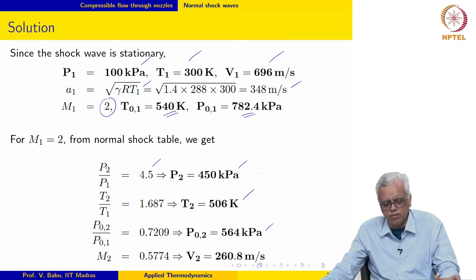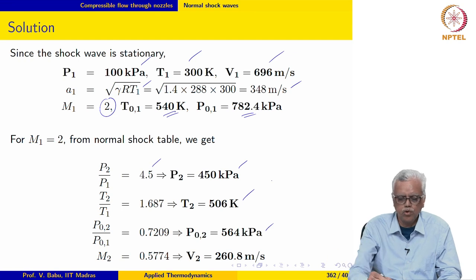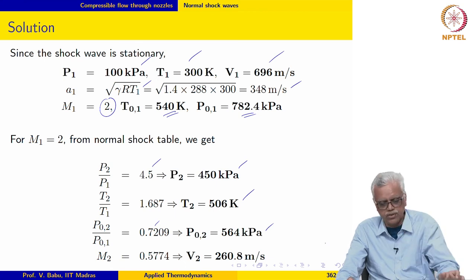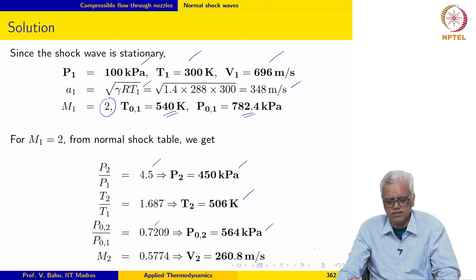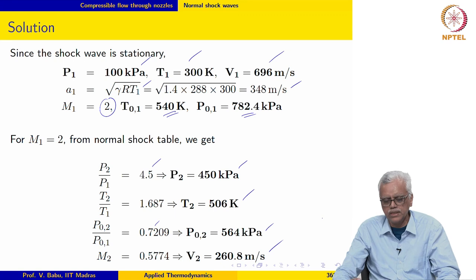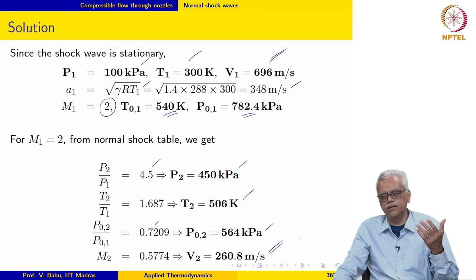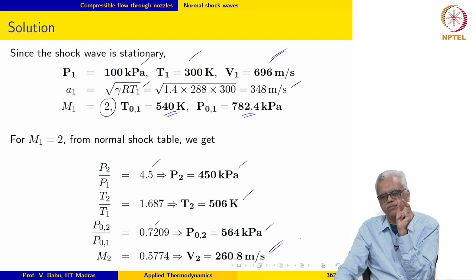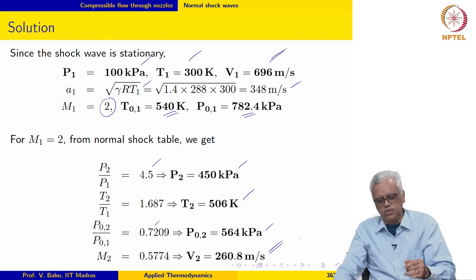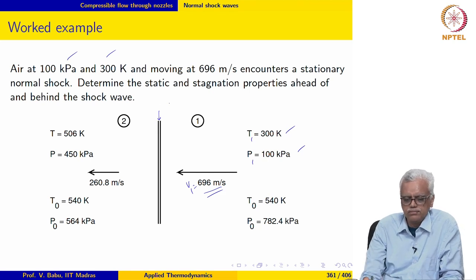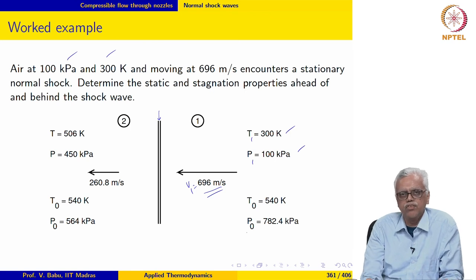The loss of stagnation pressure is P02 over P01 equal to 0.7209, so the loss is roughly about 30 percent. M2 is also known, so the velocity downstream of the shock wave can be evaluated. The velocity was 696 m/s upstream and has come down to 260.8 m/s downstream. The flow has been decelerated across practically zero distance from 696 to 260.8 m/s — that is the power of the shock wave.